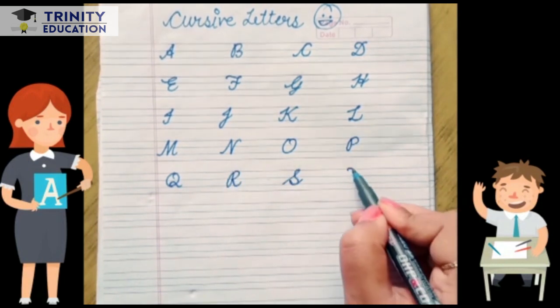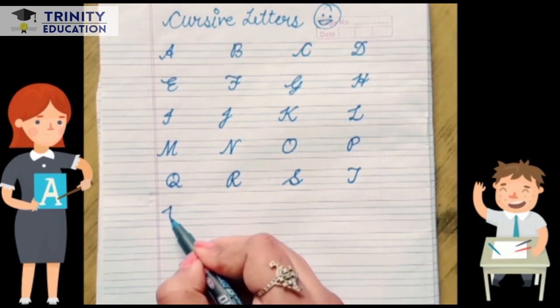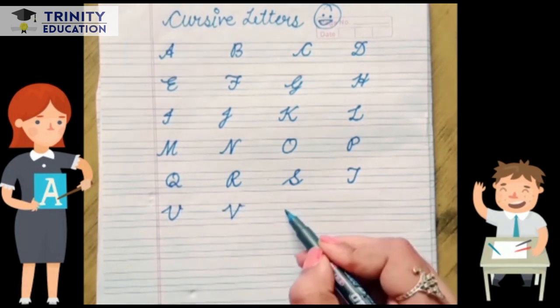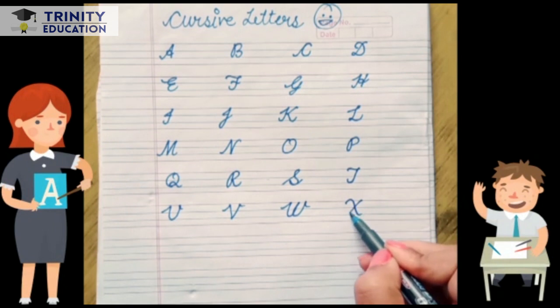R for rabbit, S for sheep, T for tiger, U for umbrella, V for van, W for watch, X for x-ray.